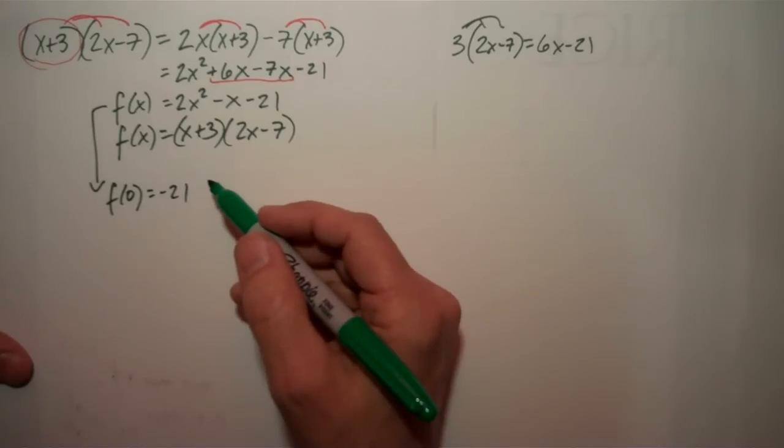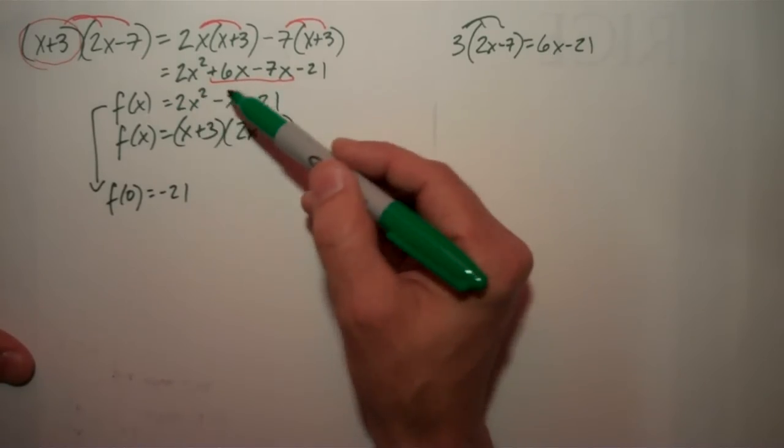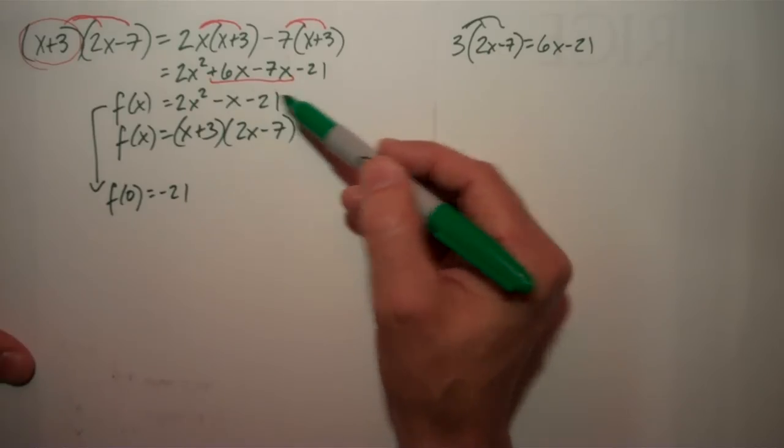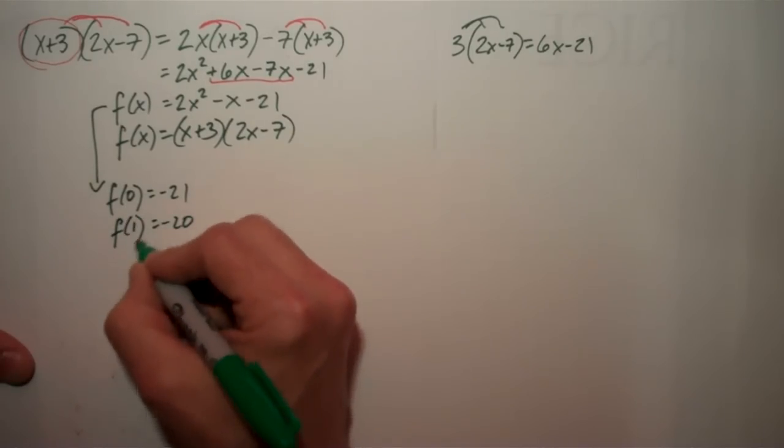All right, let's try another easy one. Let's say, what's f of 1? 1 squared is 1 times 2 is 2, minus 1 is 1, minus 21 is negative 20. So that's f of 1.